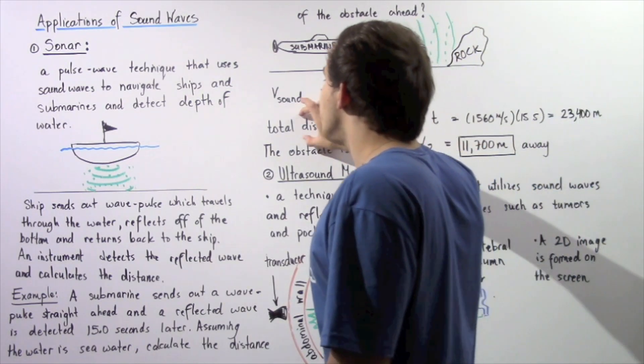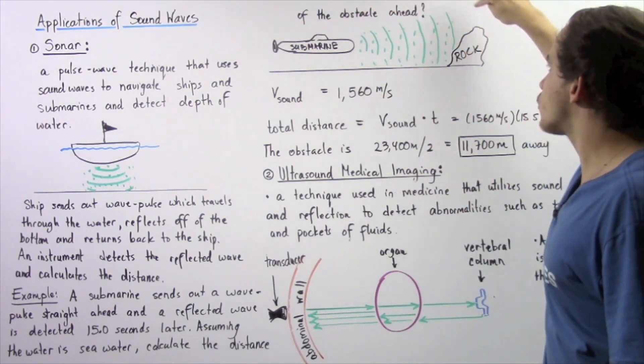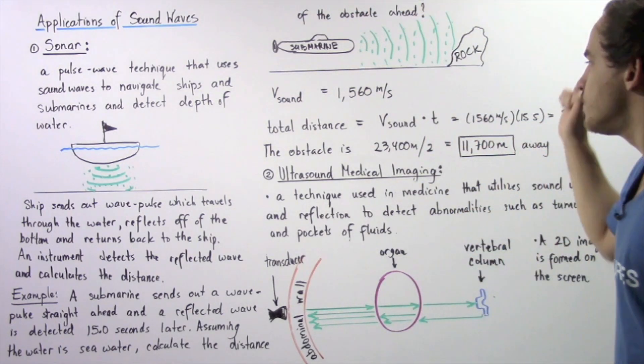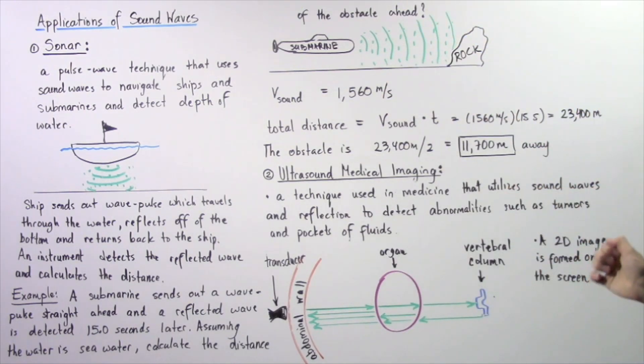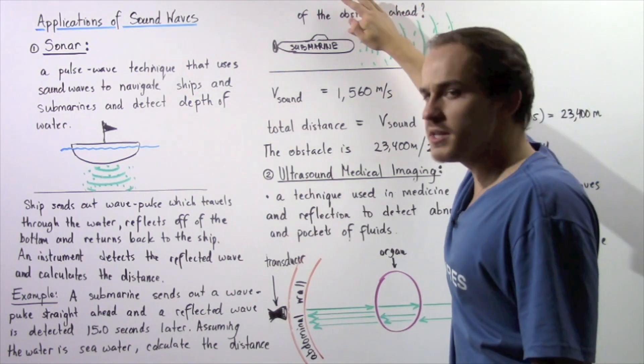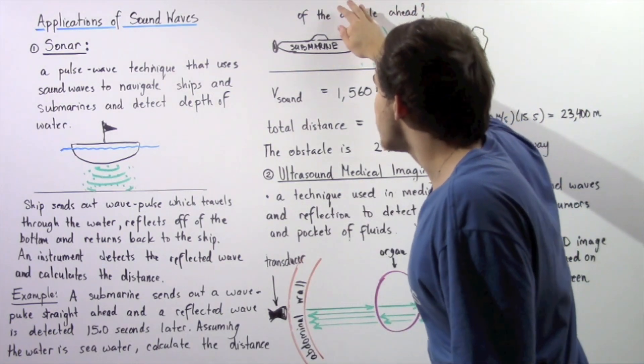To calculate the total distance our wave travels from the submarine to the rock and back to the submarine, we take our velocity and multiply by the total time elapsed. So 1560 meters per second multiplied by 15 seconds gives us 23,400 meters.